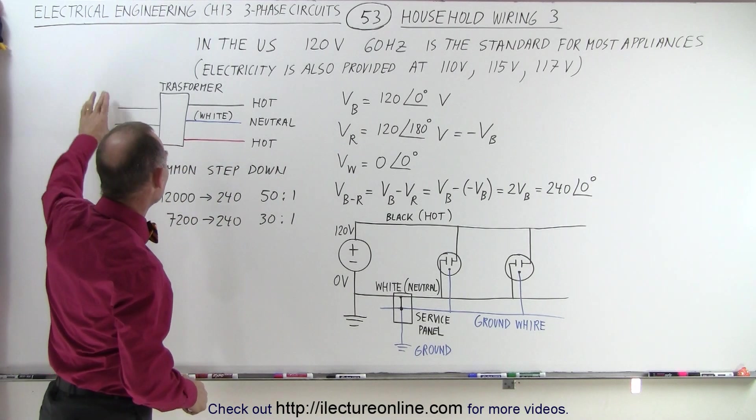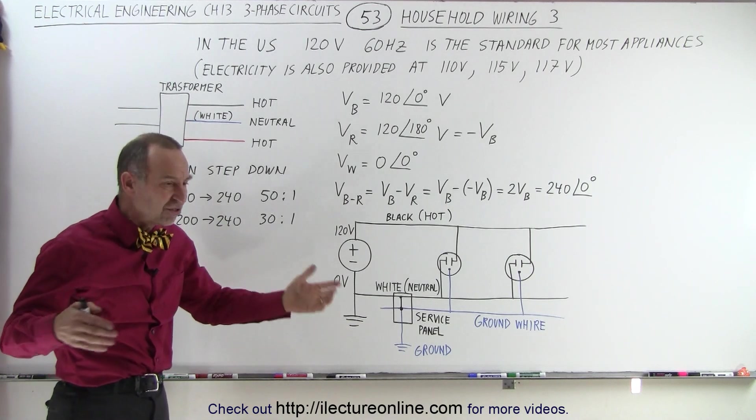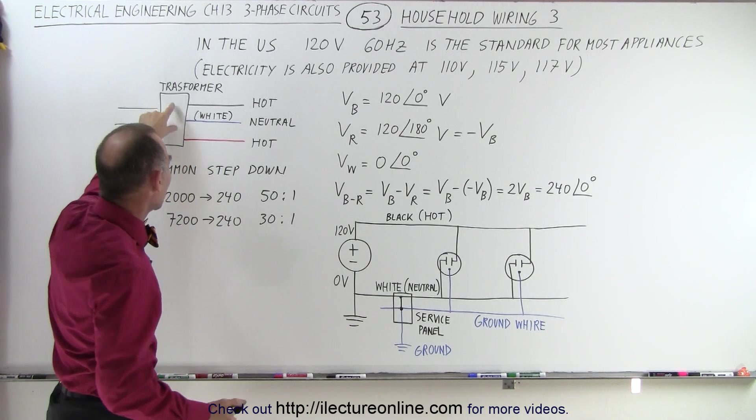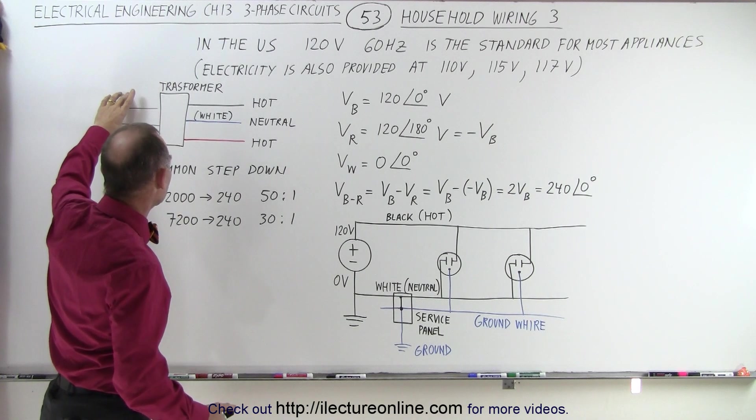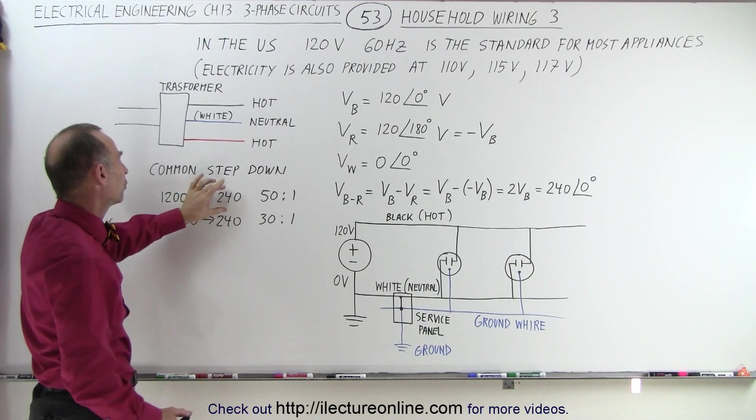Now notice that on the street we have the higher voltage lines that reach the transformers, typically on each region, each few blocks. We have a transformer that steps down the voltage from typically about 12,000 or 7,200 volts down to 240 volts.